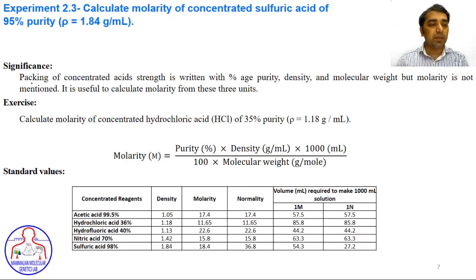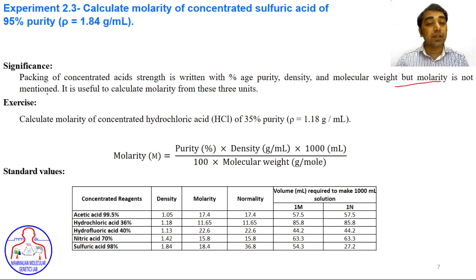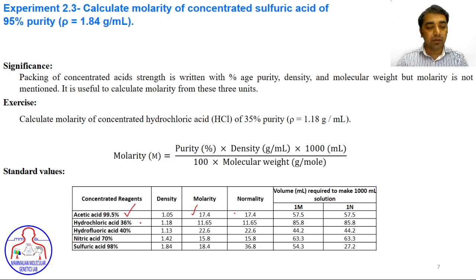The packaging of concentrated acids shows percentage purity, density, and molecular weight, but not molarity — that's why it's important to calculate molarity from these parameters. Acetic acid is found at 99.5% purity with molarity approximately 17.4; hydrochloric acid at 11.65 molar; nitric acid at 15.8 molar; and sulfuric acid in concentrated form is 18.4–18.5 molar.